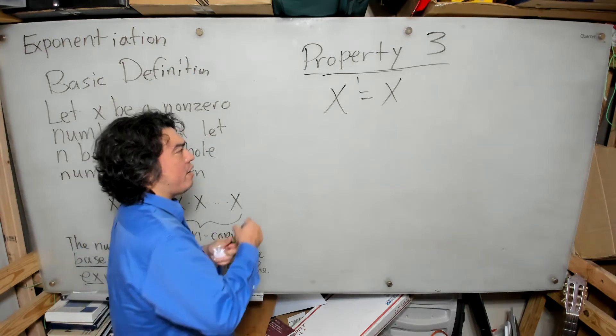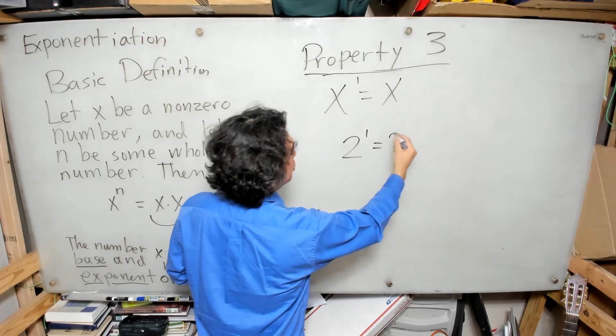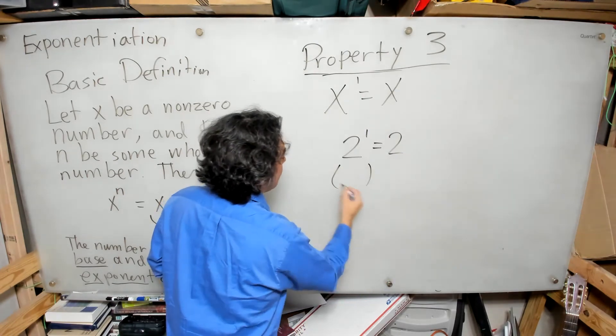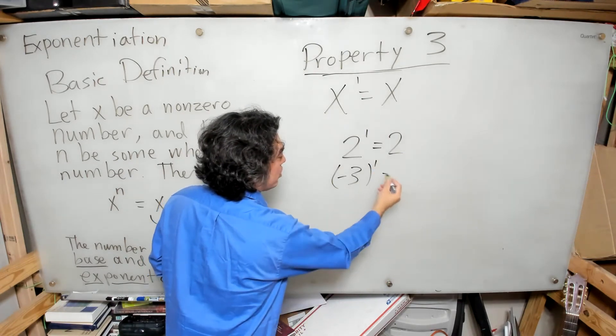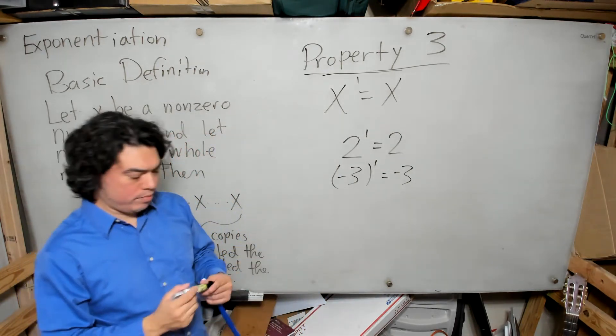So if I have 2 to the 1 power, that's just 2. If I have negative 3 to the 1 power, that's just negative 3, and so on.